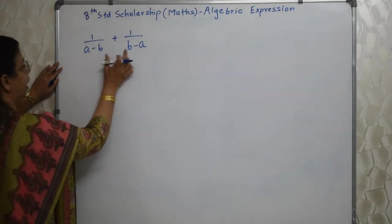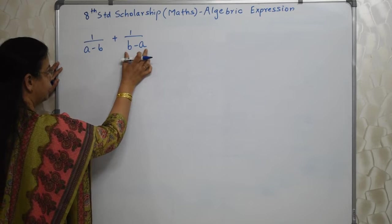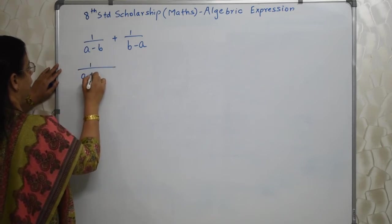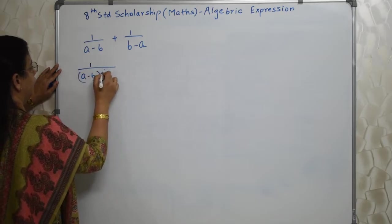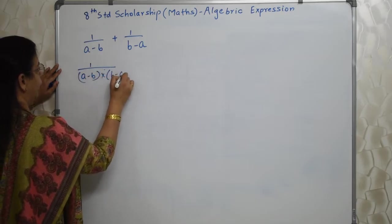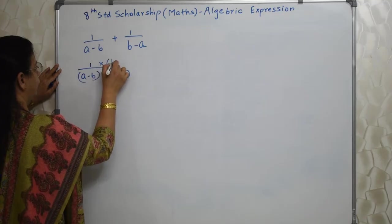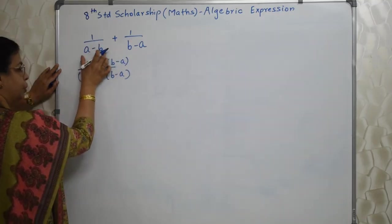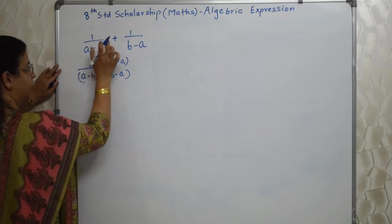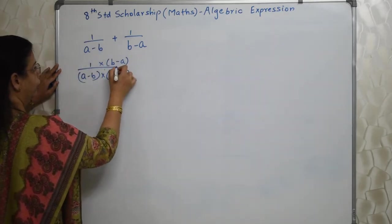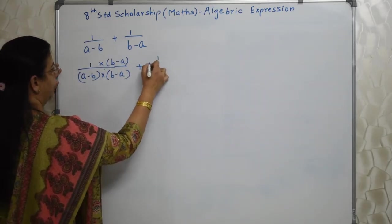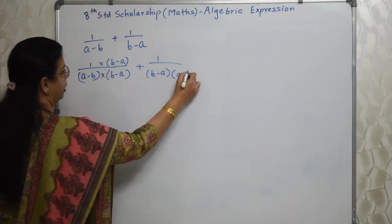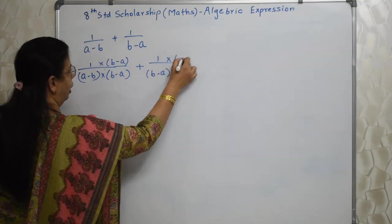This doesn't have B minus A. This doesn't have A minus B. So let's give it A minus B into B minus A. So here also B minus A. So basically I am giving this to this particular term and this to this particular term. Whatever they don't have. Plus 1 upon B minus A is already there. I am giving A minus B. So on top also A minus B.